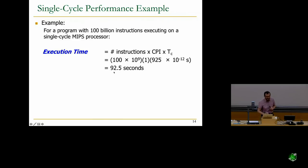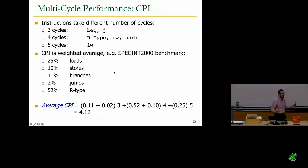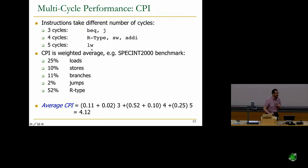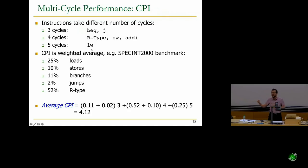Now let's look at multi-cycle performance. In multi-cycle machines, you have two things to compute: cycles per instruction and clock cycle time. Instructions take different numbers of cycles — branches and jumps take three cycles, R-type instructions, store words, and add immediates take four cycles, and load word takes five cycles. If you look at the state machine, there are five states needed to execute a load word.